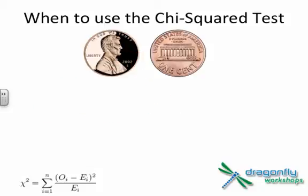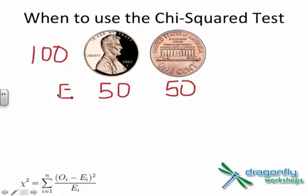If we start with something simple that only has two possibilities, we could use an example with pennies. Let's say we take 100 pennies and flip them up into the air. We would expect that 50 of those pennies would land heads up and 50 would land tails up. That's our expected frequency. If we observe that 60 land heads up and 40 land tails up, this is our observed frequency or observed outcome.